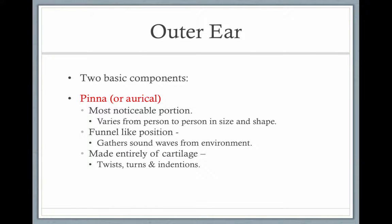The outer ear has two basic parts. The pinna, or the auricle, is the most noticeable portion. It varies from person to person in size and shape. It's a funnel-like structure that gathers sound from the environment, made entirely of cartilage with twists, turns, and indentions.